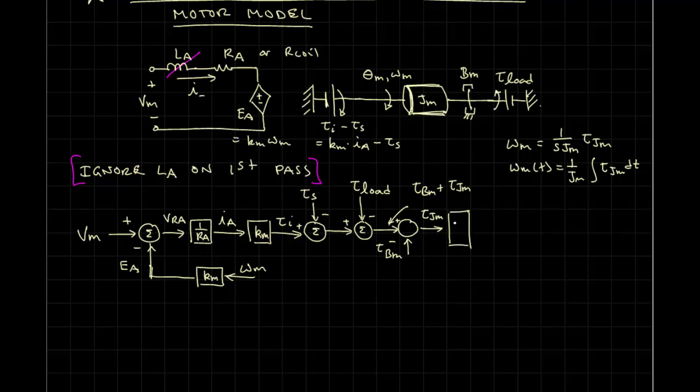All right, but I'm going to do this in the S domain here. So, if we scale this by 1 over Jm, and then we integrate it, I'll represent the integration by 1 over S, the output is omegam.